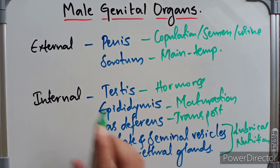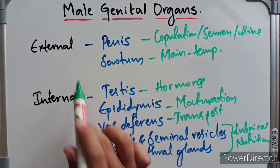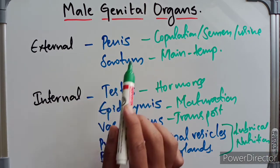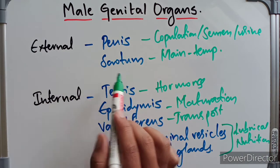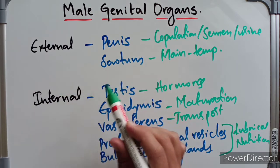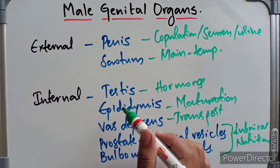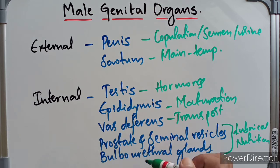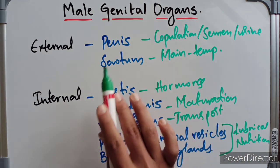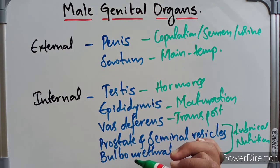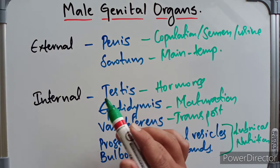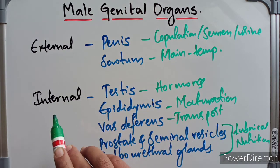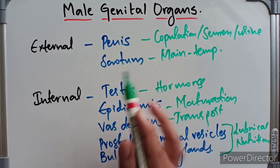To summarize, the male genital organs include the external and internal. Under the external we have the penis and scrotum. The internal organs include the testis, epididymis, vas deferens, prostate, seminal vesicles, and the bulbourethral glands. These are the functions of the male genital organs.